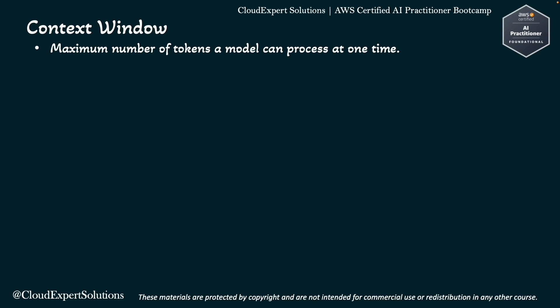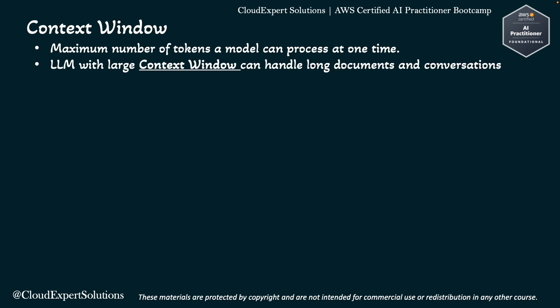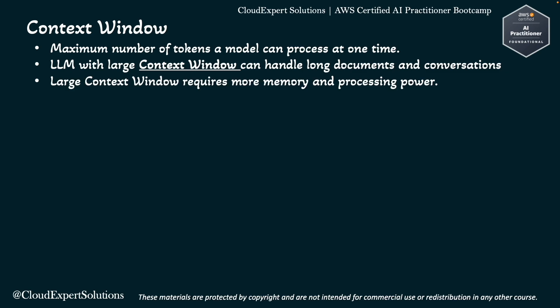Now let's review Context Window. A context window is the maximum number of tokens a model can process at one time — think of it like a memory span. The more tokens it can handle, the more it can understand long documents or conversations. Any LLM with a large context window requires more memory and processing power because it will process a bigger chunk of the document.